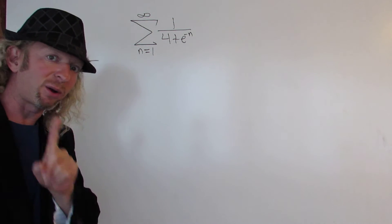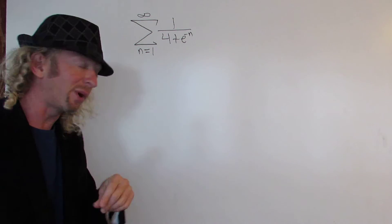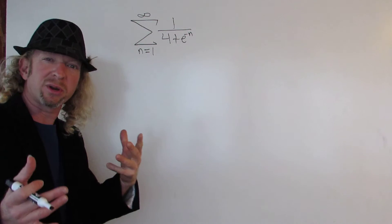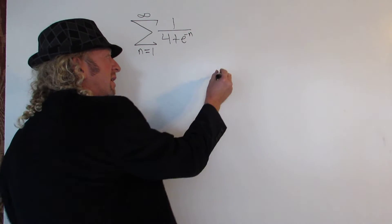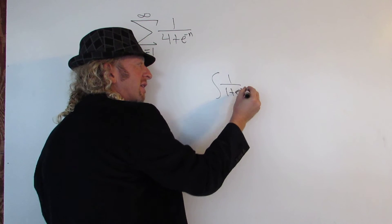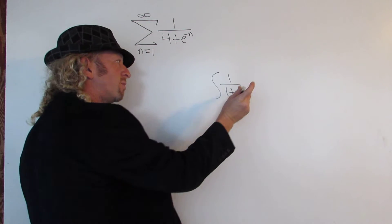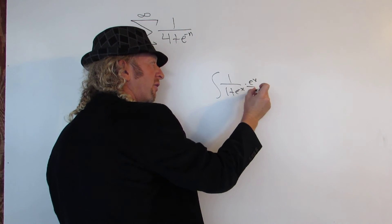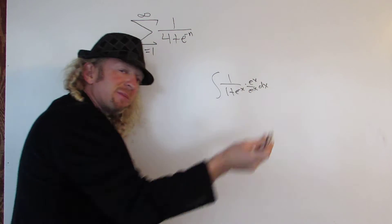So one idea is to multiply by 1 in a very clever way. And this idea comes from integration. A lot of times when you have to integrate things like 1 over 1 plus e to the negative x, what you would do in a problem like this is you would multiply by e to the x over e to the x. And that would allow you to make a substitution.